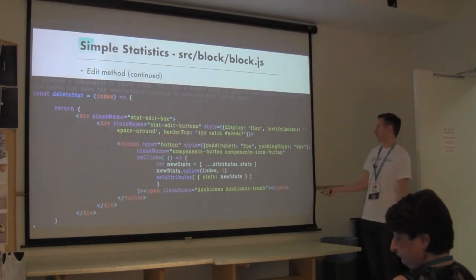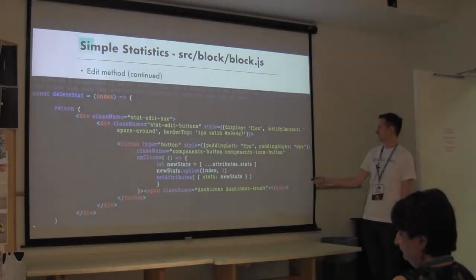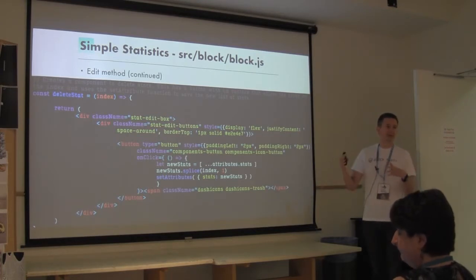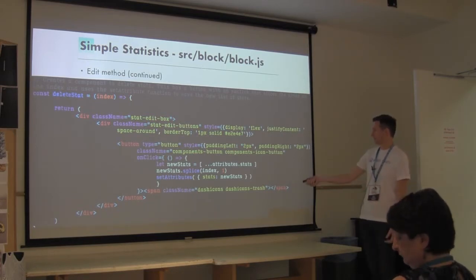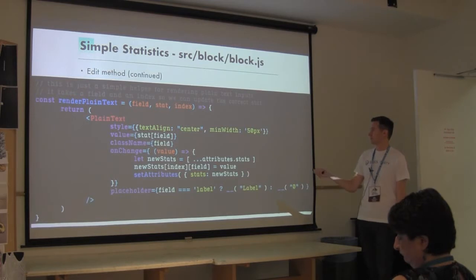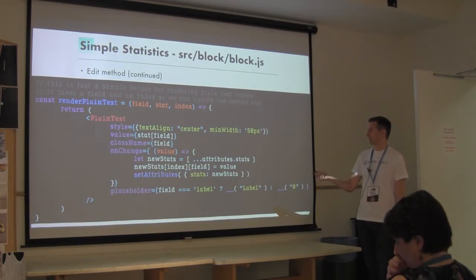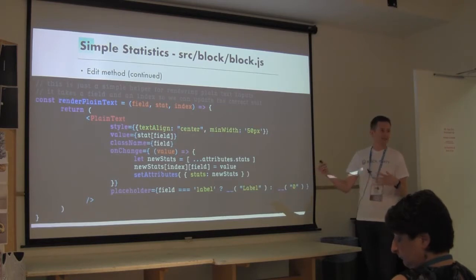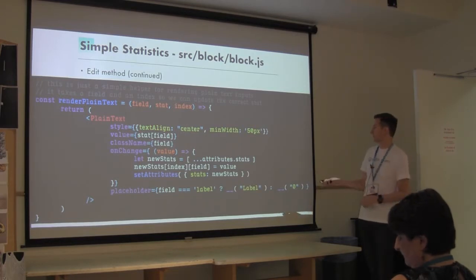DeleteStat works much the same way - it's just a button with an onClick. We're going to use slice to take out the stat we don't want anymore, again using setAttributes. Then we're going to make some convenience methods: renderPlainText is a more flexible function that takes what type of field it is and what the index is, and makes an input for us that will save to the right piece of data in the stats array.